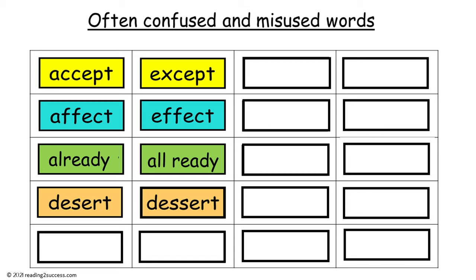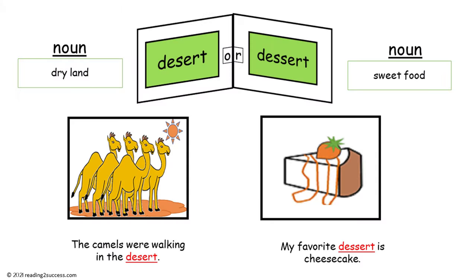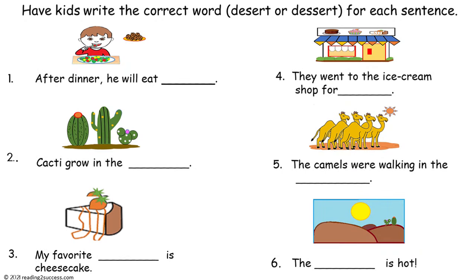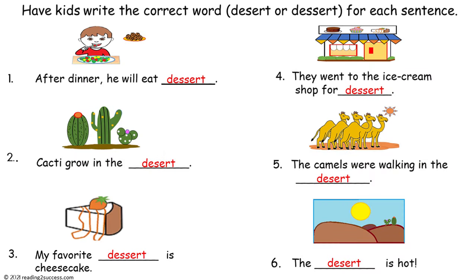Our fourth pair of often confused and misused words are desert and dessert. Desert, spelled D-E-S-E-R-T, is a noun and it means dry land. In our example, the camels are walking in the desert — they are walking on dry land. Dessert, spelled D-E-S-S-E-R-T, is a noun that means sweet food. For example, my favorite dessert is cheesecake. Have kids write the correct word — desert or dessert — for each sentence.